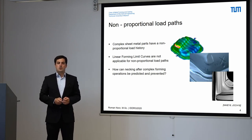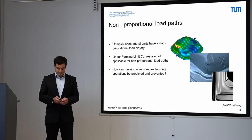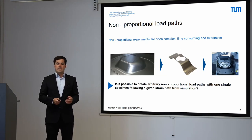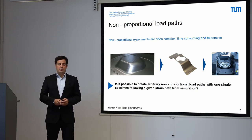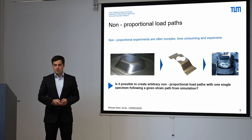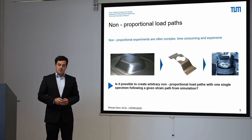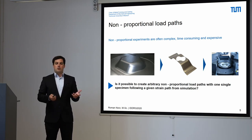How can we predict and prevent necking after such complex strain paths? There have been several models proposed to predict necking after these complex strain paths. For example, the EMFC model of Professor Hora, the PEPS model, or the generalized forming limit concept model. Those models are quite accurate, but we have a problem validating them at a laboratory scale.